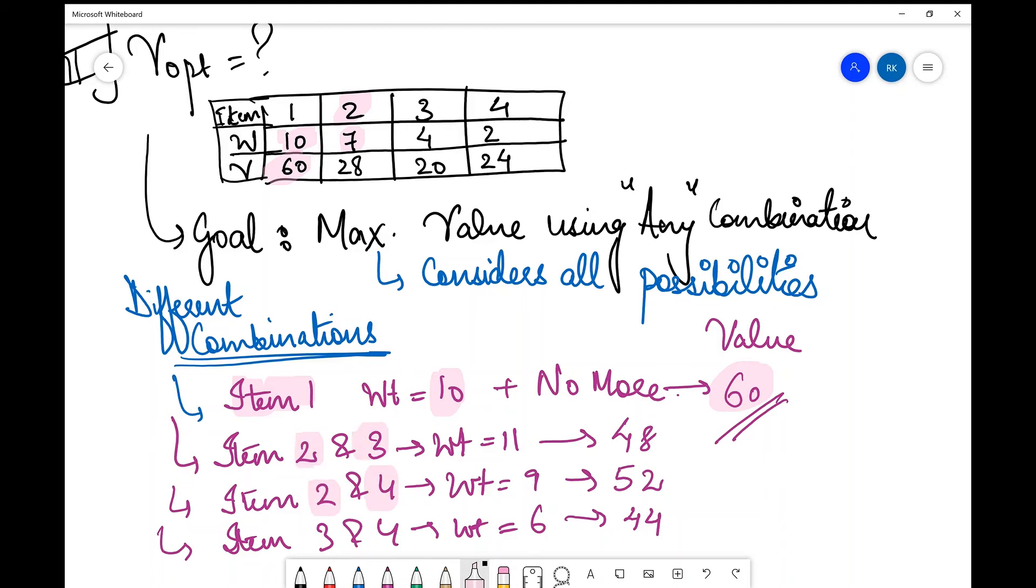I cannot choose item 1 with it because then the total weight becomes 17. So if I choose 2 and 3 my total weight over here becomes 7 plus 4 which is 11 which is the best fit for the bag but that is not our objective over here and the net profit over here becomes 28 plus 20 which is 48 and for 2 and 4 total weight becomes 7 plus 2 which is 9 and the total profit becomes 28 plus 24 which is 52.